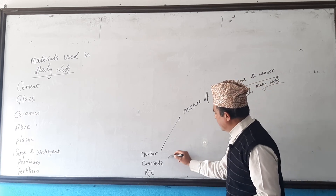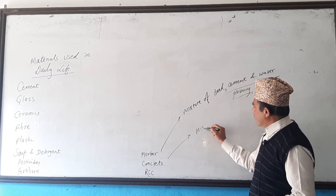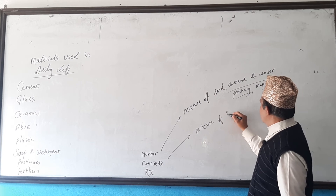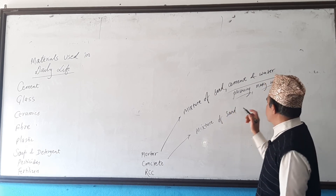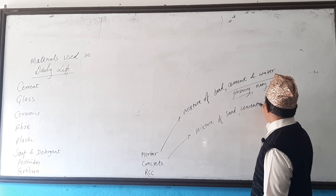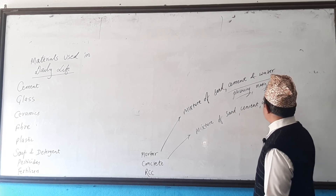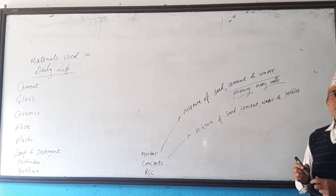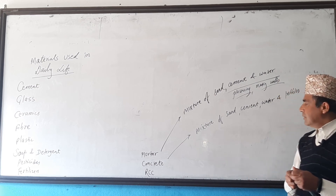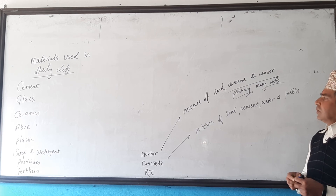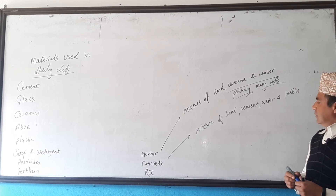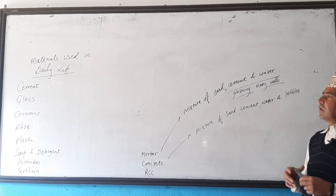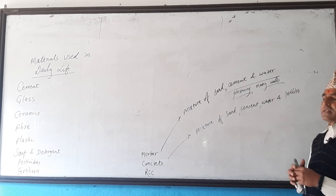What is concrete? Concrete is also a mixture of sand — but slightly bigger-sized sand — cement, water, and pebbles (small pieces of stones). Concrete is used for making statues, bridges, and similar structures.